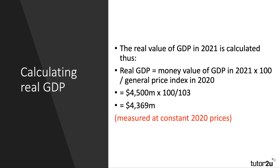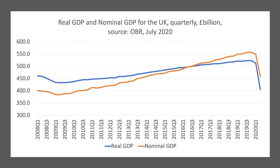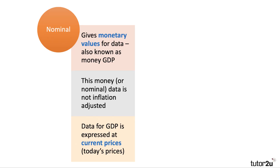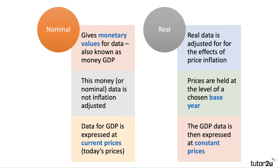So real GDP is inflation-adjusted data. This chart shows GDP in real terms in blue and GDP in nominal money terms in orange. You can see that real GDP grows more slowly than nominal GDP because we're taking inflation into account — deflating the data. Nominal GDP gives monetary values at current prices, whereas real GDP is expressed at constant prices.